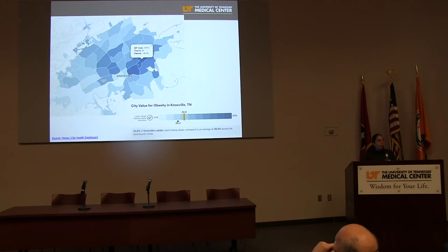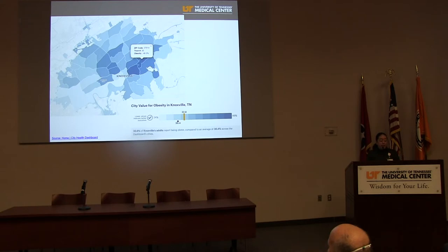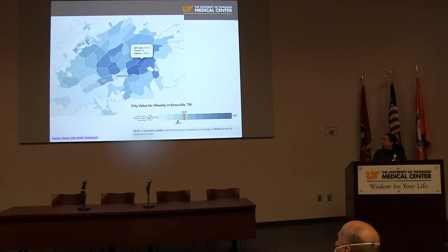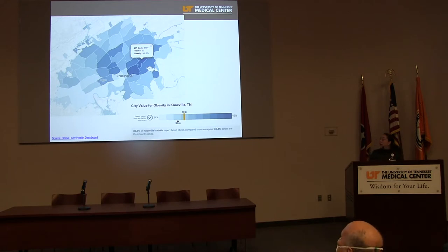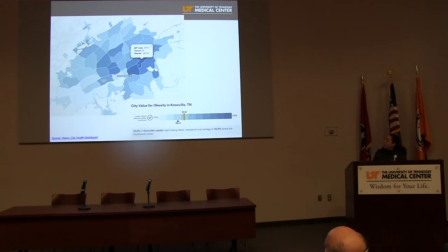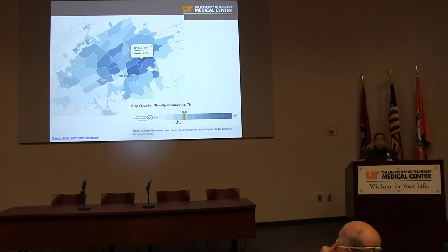Let's think about more specific health outcomes, like obesity. We have basically the same map over and over — we are getting those health outcomes in the same areas. When you look at the general data, 32.6% of Knoxville adults report being obese compared to the average 30.4% across the dashboard, a small difference across the 750 cities in the city dashboard. But when you look at a specific census tract within Knox County, there are zip codes that have almost 50% of their population with obesity. This should spark questions about why this is happening.